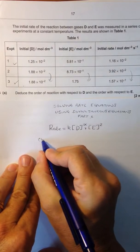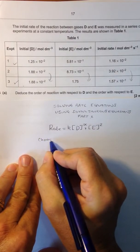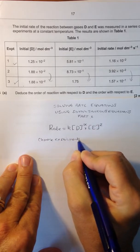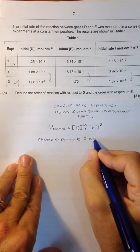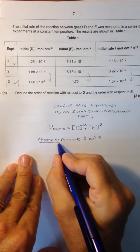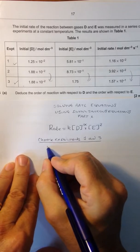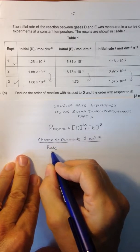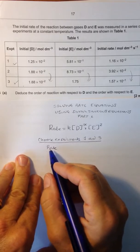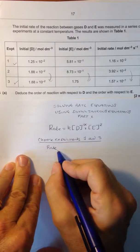So, let's choose experiments 1 and 3 to compare. So again, using our simultaneous equation, we know that the rate, let's choose the faster rate goes on the top just to make our lives simpler. So that's the rate in experiment 3.